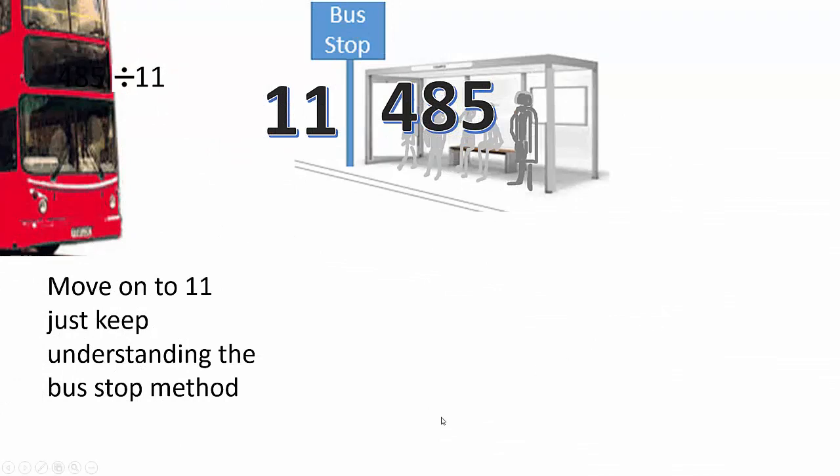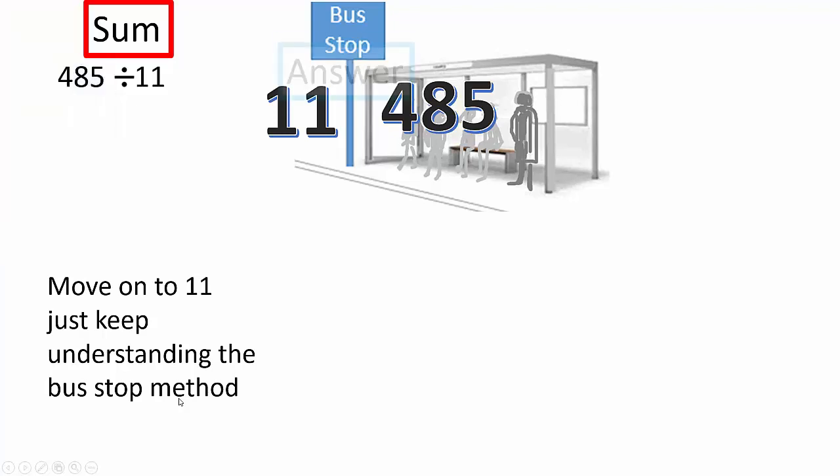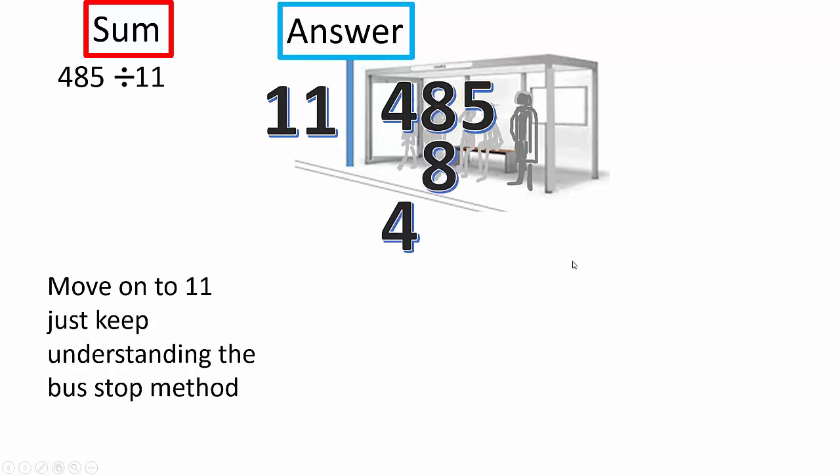We're moving on to 11 just to keep understanding the bus stop method. Alright, there's the sum. 485 divided this time by 11. Okay, 11 into 4 doesn't go. So, let's bring down the 4. Let's bring down the 8. 11 into 48 goes 4 times. 4 times 11 equals 44.